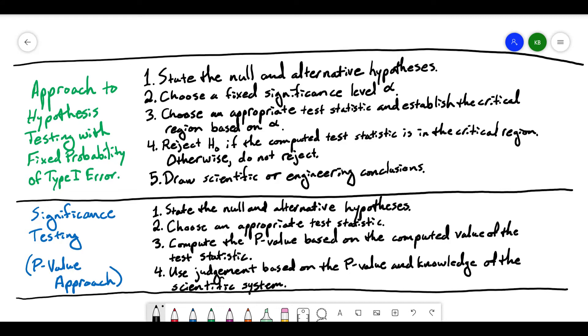Now, if instead you take the p-value approach, you're going to go through four steps. The first step remains the same: you're going to state the null and alternative hypotheses. Then, second, you're going to choose an appropriate test statistic. Notice we're skipping the step of choosing a fixed significance level. We're going to choose an appropriate test statistic, and then once we have that test statistic, we're going to compute the p-value based on the computed value of the test statistic. And then finally, you're going to use your judgment based on the p-value that you've gotten and your knowledge of the scientific system that is in question here.